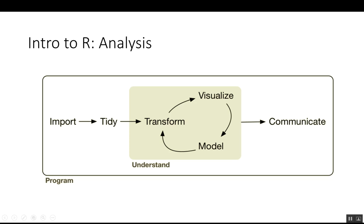This is a model created by Hadley for researchers, statisticians, and data scientists. The basic model is: you import your data into R, you tidy it up — cleaning up variables, getting rid of or addressing missing data — and then you enter into an area of understanding. This is a recursive loop. Typically you start with transforming, which could be summarizing, something like crosstabs, or adding additional variables. From there you typically visualize the data, then make a model of your data, going back and forth. This helps you understand what's going on in your data and build a model that will generalize. From there you typically communicate your results to someone else, typically in a written format or a presentation.